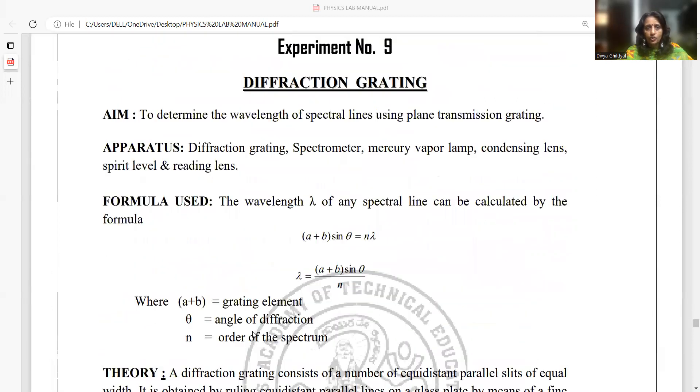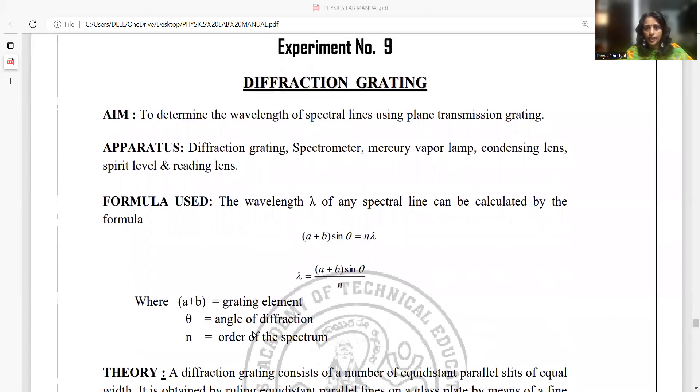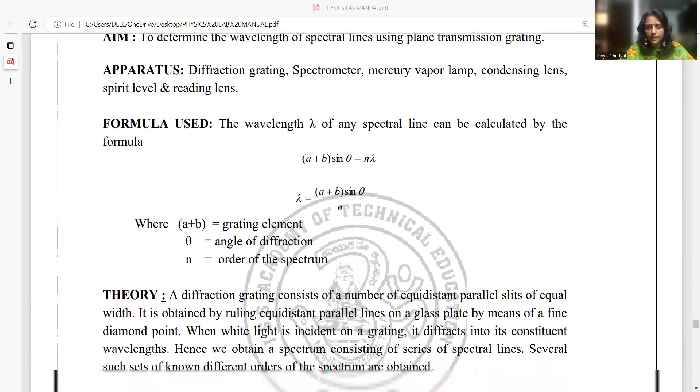Next, grating. To determine the wavelength of spectral lines using plane transmission grating, apparatus required is diffraction grating, spectrometer, mercury vapor lamp, spirit level and reading lens. My formula used is (A + B) sin θ = Nλ, where A + B is the grating element given by 2.54 divided by number of lines on the grating. 2.54 comes from conversion factor of inch. N is number of lines, which can be 12,800 or 15,000 as mentioned on the grating. Usually, we are made to study the first order of spectra, N = 1. So, the formula reduces to λ = (A + B) × sin θ.